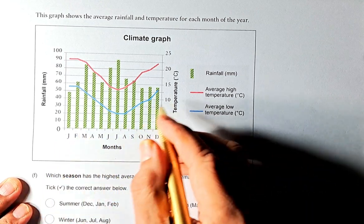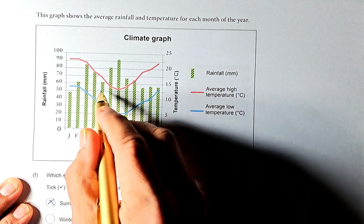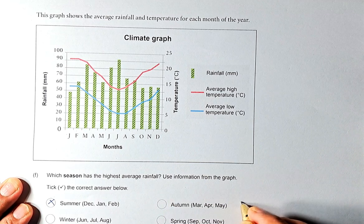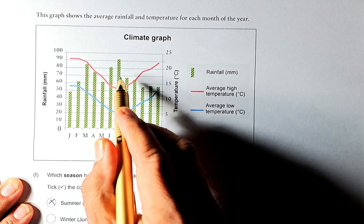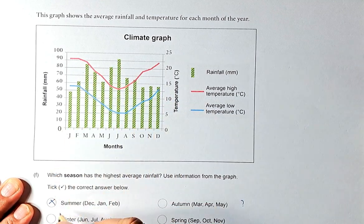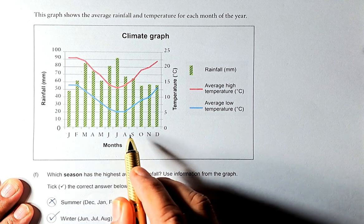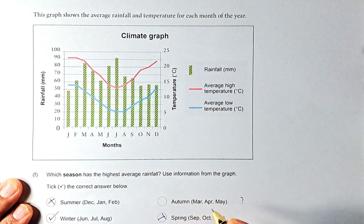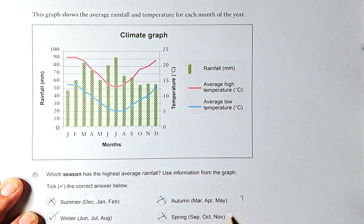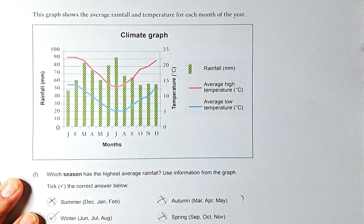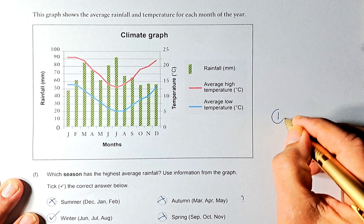We're going to check each season. Summer is December, January, February - it's not so high, so we're going to say no. Autumn, March, April, May could be. We give a question mark. Winter, June, July, August - it seems to be this number here is higher than this number, so we're going to put this at the moment. And spring is September, October, November - that is a bit low, so it is no. This is also no because winter, June, July, August is a lot higher than autumn. So we're going to answer that the highest rainfall is going to happen in winter in June, July, August, and that will be outcome number one.